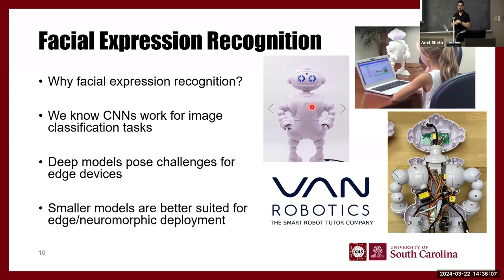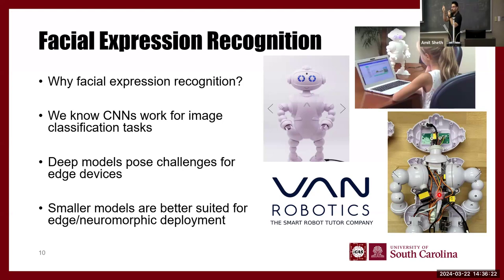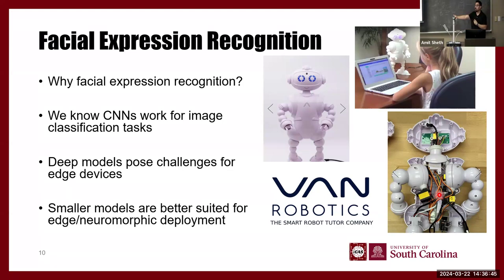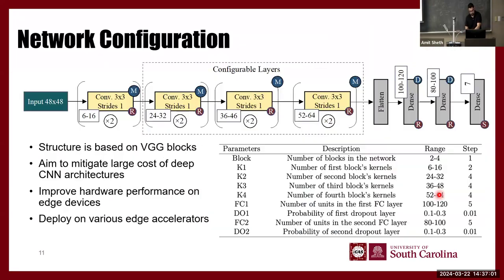We wanted to do facial expression recognition at the edge because of privacy: we don't want to send data off the device. Abby already has a Raspberry Pi inside, and the idea was to connect a USB TPU accelerator to the Pi as a co-processor to do facial expression recognition — making Abby smarter with minimal changes to the existing system. We wanted it to be fast, which is why we didn't rely solely on the Raspberry Pi — it wasn't fast enough.